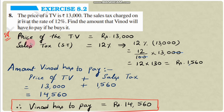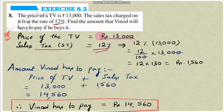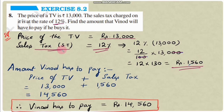Solution: Price of TV = 13,000 rupees. Sales tax = 12% of 13,000 = (12 ÷ 100) × 13,000 = 12 × 130 = 1560 rupees.